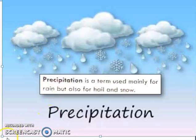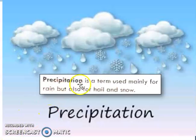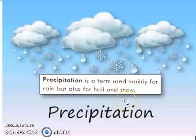Precipitation is a term used mainly for rain, but also for hail or snow. So precipitation is the name for rain, and hail and snow can also be called precipitation. When it is winter, in northern mountains like the Himalayas, there is snowfall — snowfall is also precipitation.